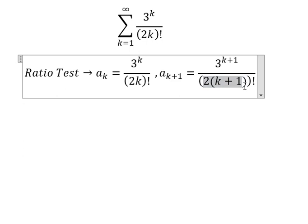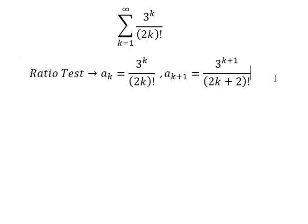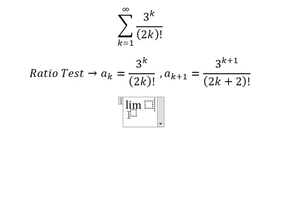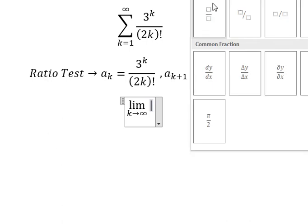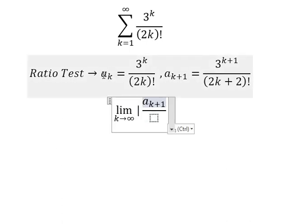So this one we have 2k plus number 2. Now we have the limit as k approaches positive infinity.